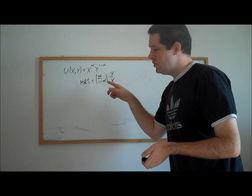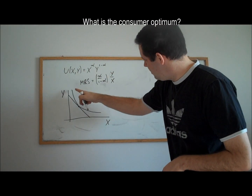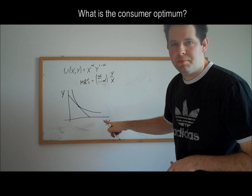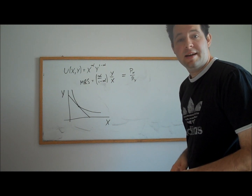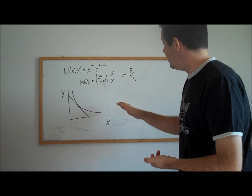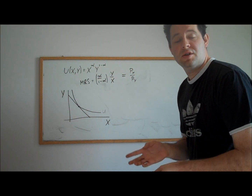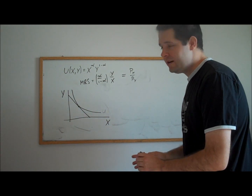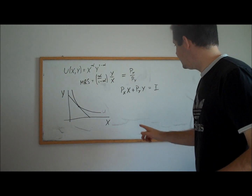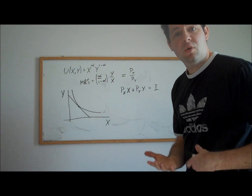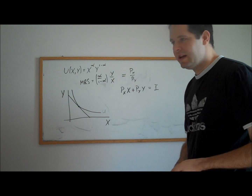Now let's use this MRS expression and what we know about consumer utility maximization to get the Cobb-Douglas demand curve. At the consumer optimum, the marginal rate of substitution equals the price ratio — the slope of the indifference curve is tangent to the slope of the budget constraint. Additionally, the consumer's optimal bundle must exhaust all income, meaning we're on the budget constraint. This gives us two equations and two unknowns, x and y, which we solve to get our Cobb-Douglas demands.